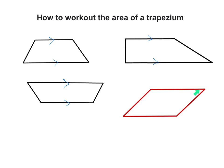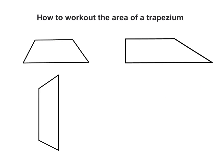What about this shape here? Is this a trapezium? No, it is not a trapezium because it has two pairs of parallel sides. That's one pair and that's another pair. So because this has two pairs of parallel sides, this is not a trapezium — this is actually a parallelogram. A parallelogram is a four-sided shape which has two pairs of parallel sides.